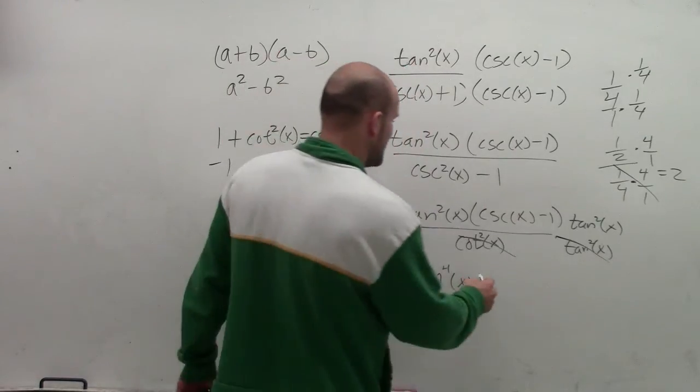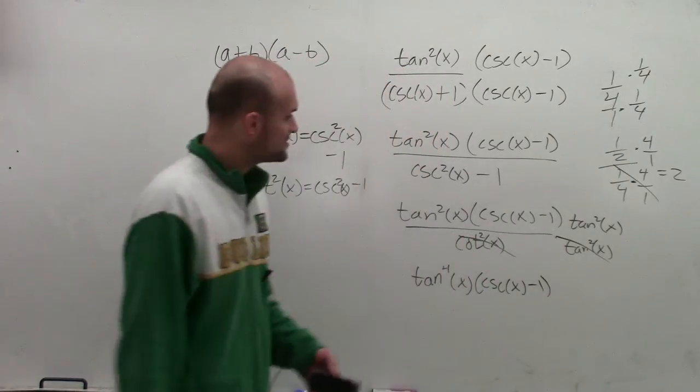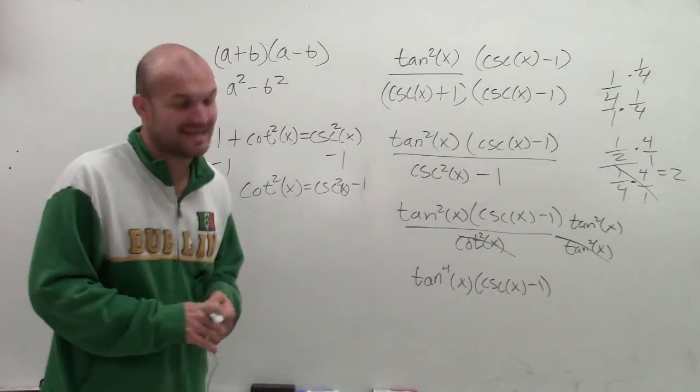Any number multiplied by its reciprocal is going to equal 1. And then I can just multiply that by cosecant of x minus 1. So there you go, ladies and gentlemen. That's how you simplify or rewrite a problem without a fractional denominator. Thanks.